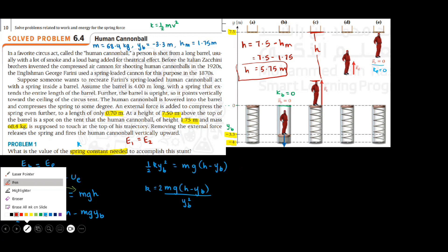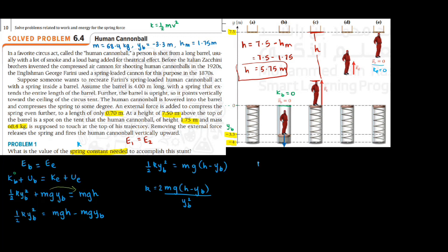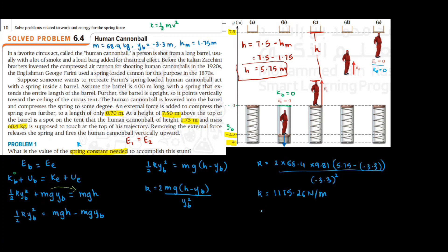Now let's substitute. K equals 2 times mass 68.4, times g = 9.81, times (h minus yB) = (5.75 minus negative 3.3), divided by yB² = negative 3.3 squared. When you solve this, you get the value of k as 1115.26 newtons per meter, which you can write as 1.1 times 10 to the power 3 newtons per meter.